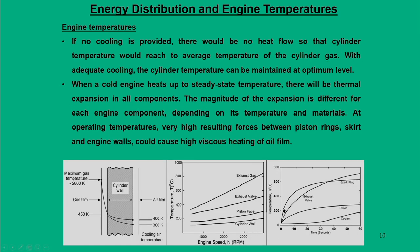In engine temperature distributions, we need to consider all parts: cylinder valve, piston face, exhaust valve, and exhaust gas. Exhaust gas is important because people often use it to tap exhaust heat — a concept used in waste heat recovery. If no cooling is provided, the engine cylinder would reach the average temperature of the cylinder gas. With adequate cooling, the cylinder temperature can be maintained at an optimum level. Cooling should not be ignored.